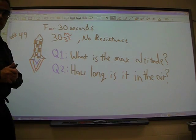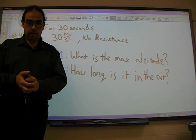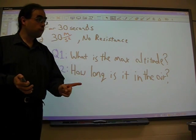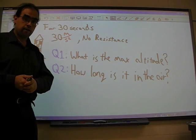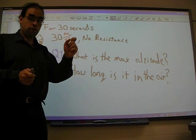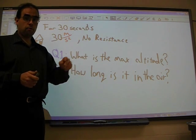To solve this problem, I'm going to break this up into three phases. We have phase one, which lasts for 30 seconds as given to us. That's powered flight. We are accelerating upwards. We also have this growing velocity in the upwards direction.